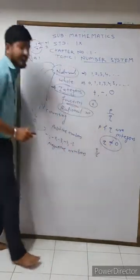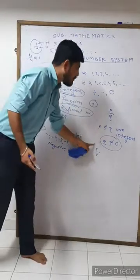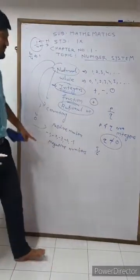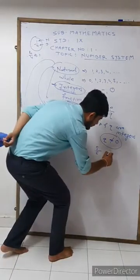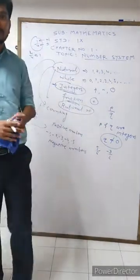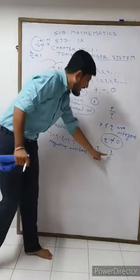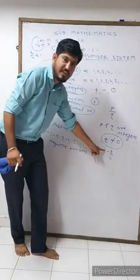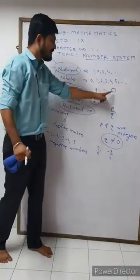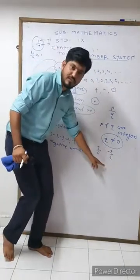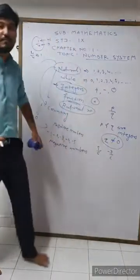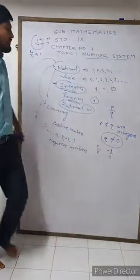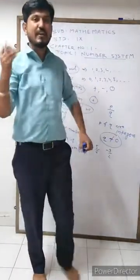For example, five by six — is it a rational number? Yes, because five and six are both integers written in p by q form. Similarly, minus three by two is also a rational number, because minus three is a negative integer and two is a positive integer, both are integers, and we can write it in p by q form where the denominator two is not equal to zero.